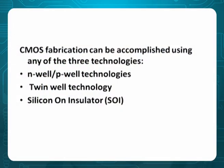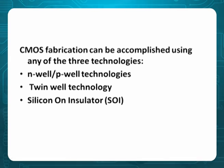CMOS fabrication can be completed using three technologies. First: N-well and P-well technologies, where N and P are taken separately to form CMOS. Second: twin-well technology, where both are together. Third: silicon-on-insulator (SOI). These are the three technologies for fabricating CMOS.